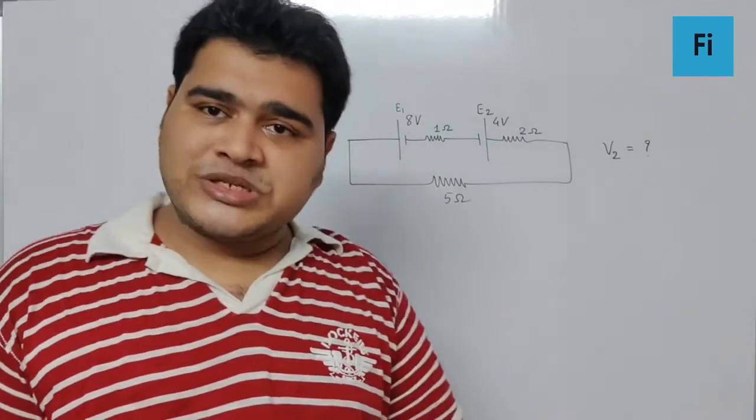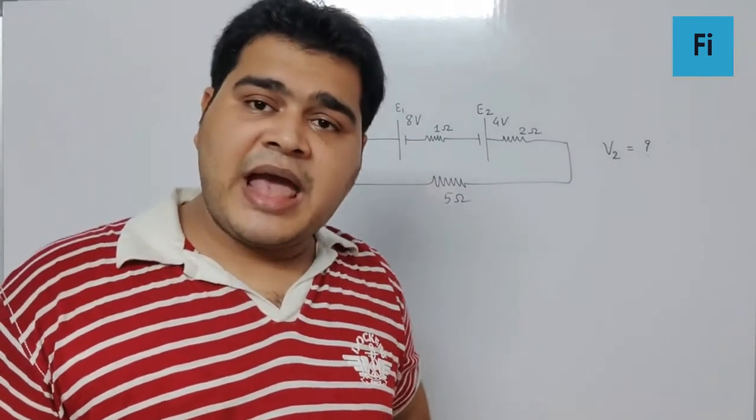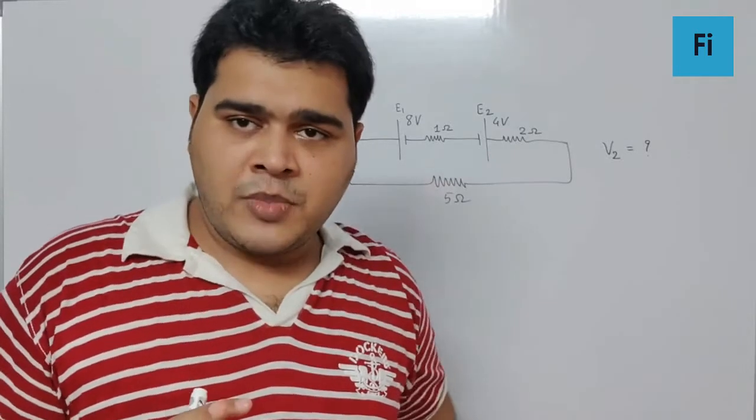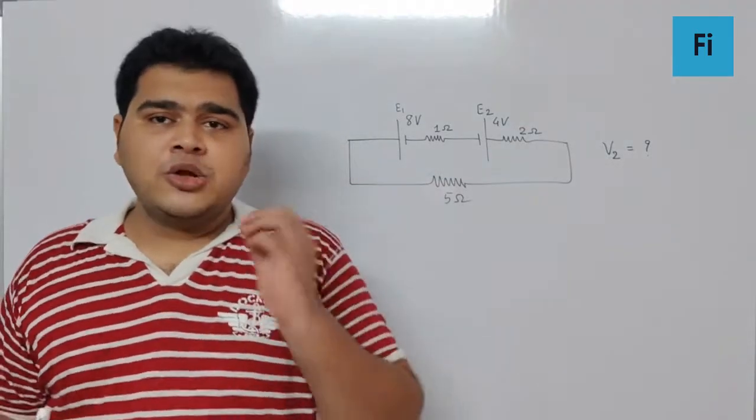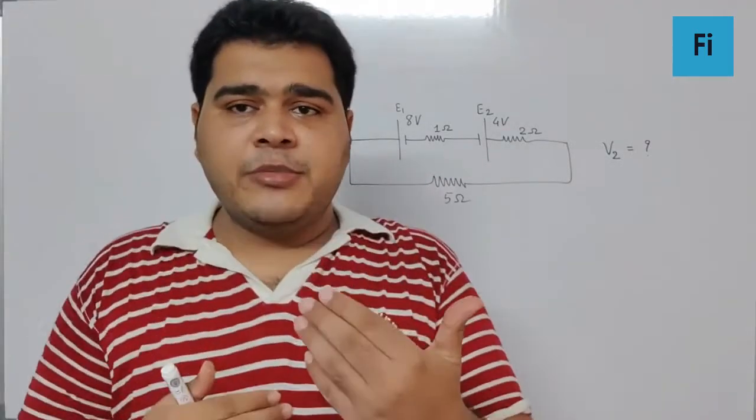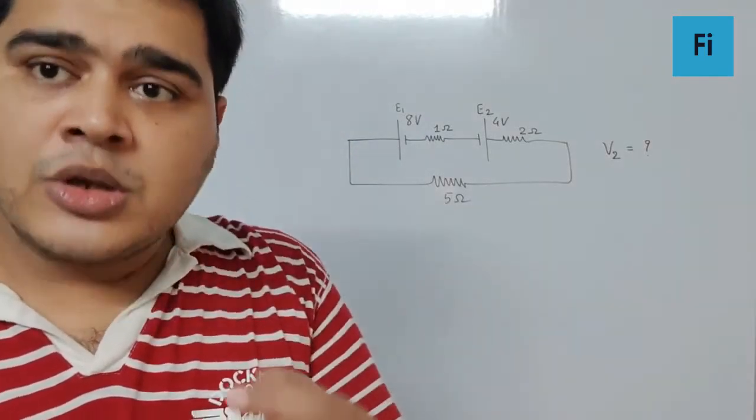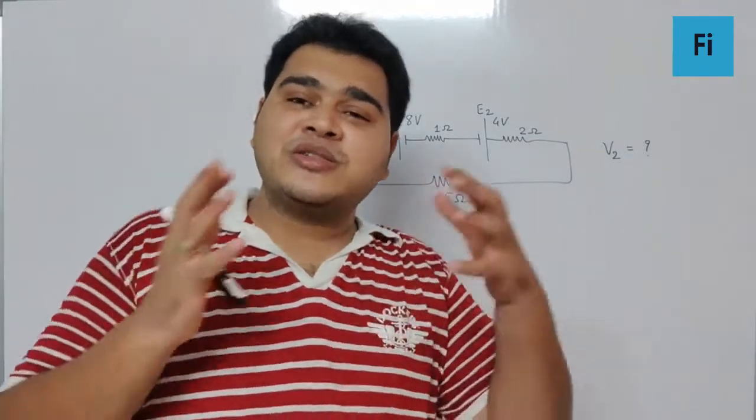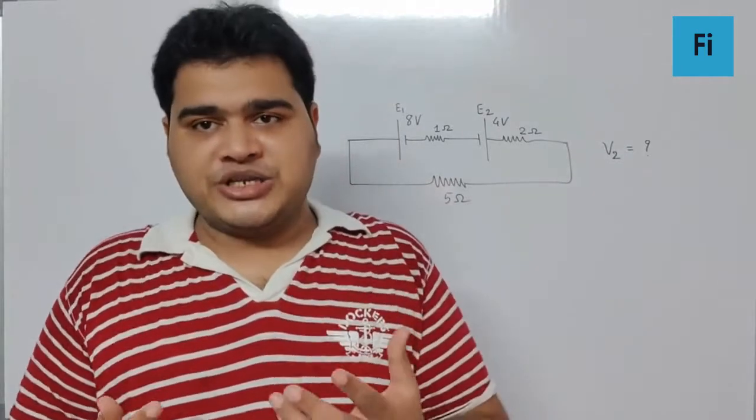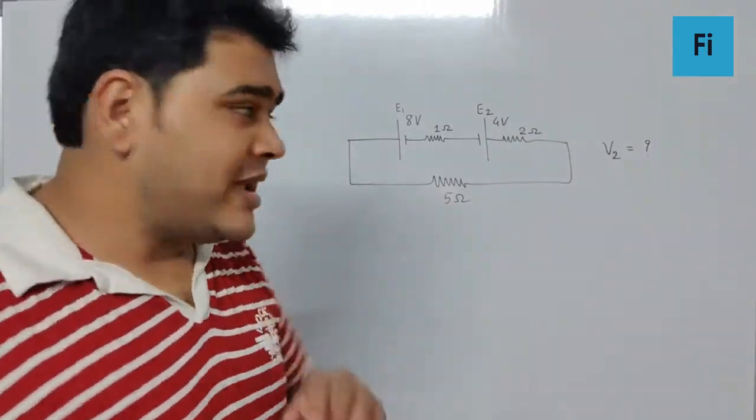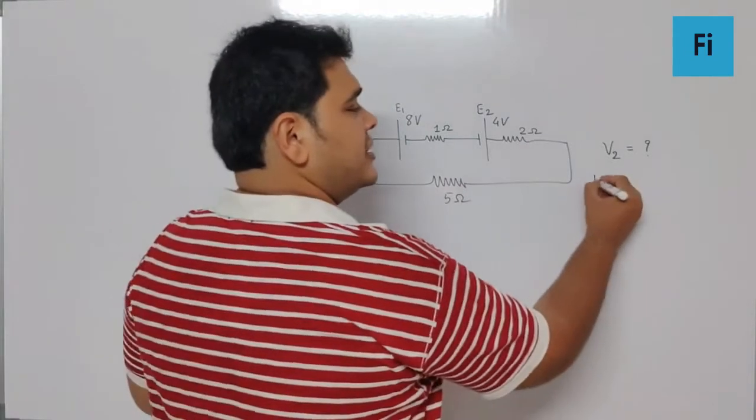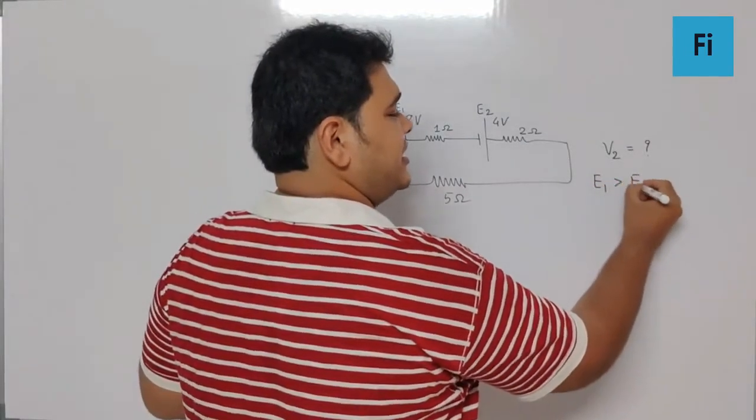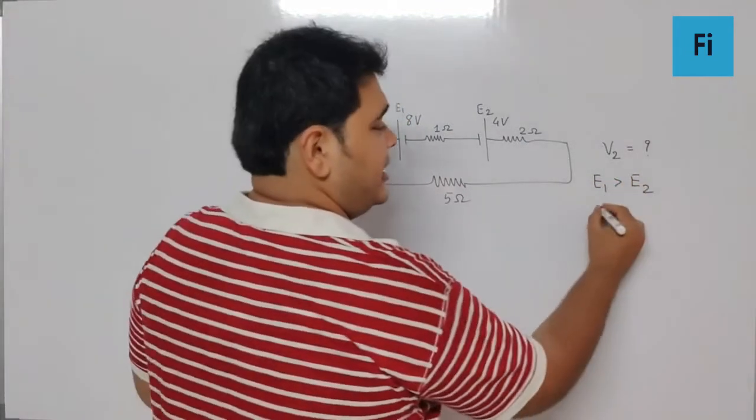Now one thing you need to understand: when the two cells are in series and they are in opposing mode, definitely one of them with a greater EMF will get discharged and the one with the smaller EMF will get charged. Please remember this. So I can say since over here E1 is greater than E2, I can say E1 will undergo discharging and E2 will undergo charging.